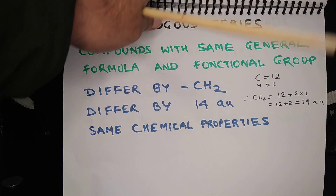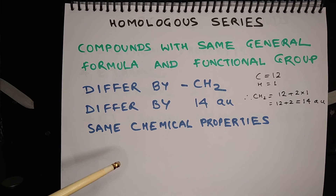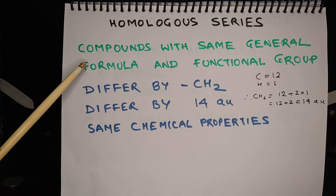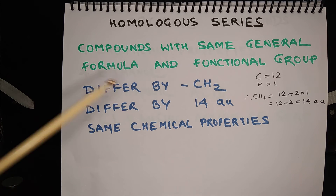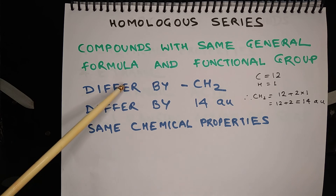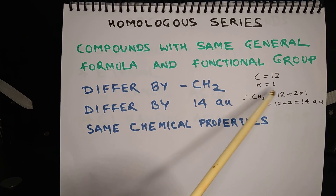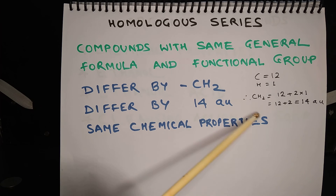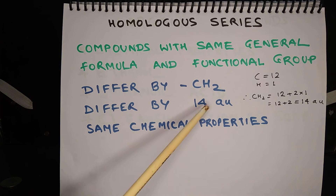The functional group governs the chemical properties of organic compounds. All the compounds with a similar functional group show similar chemical properties and they make a homologous series. The compounds with the same general formula and same functional group make a homologous series. Each subsequent member of a homologous series differs by CH2 — that is, they differ by 14 atomic mass units. The atomic mass of hydrogen is 1 and that of carbon is 12, so for CH2 the total is 12 + (2×1) = 14 atomic mass units.